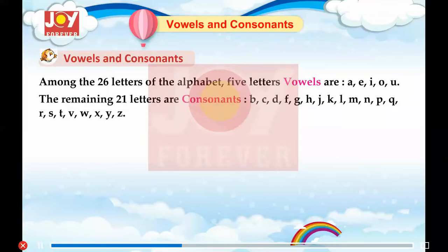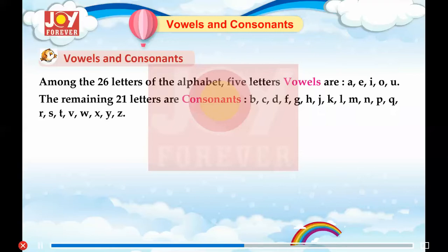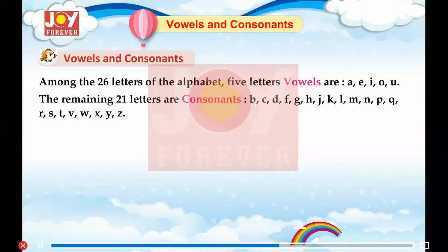The remaining 21 letters are consonants: B, C, D, F, G, H, J, K, L, M, N, P, Q, R, S, T, V, W, X, Y, Z.